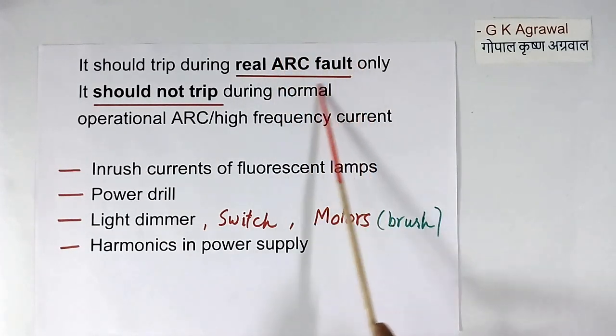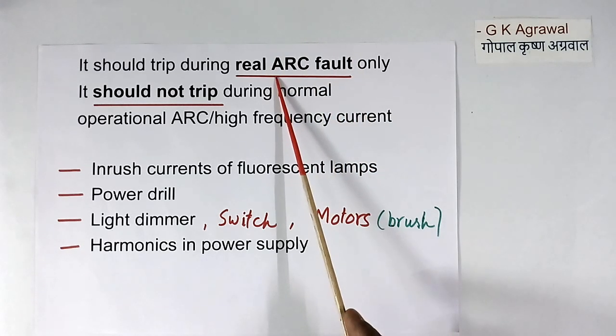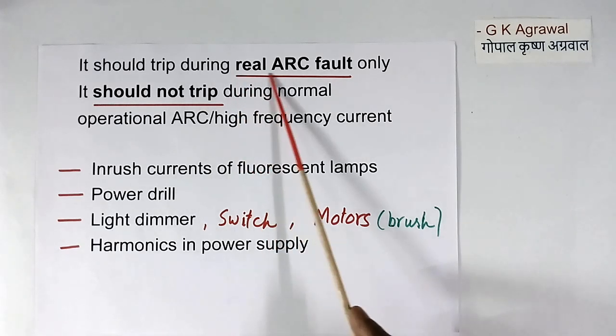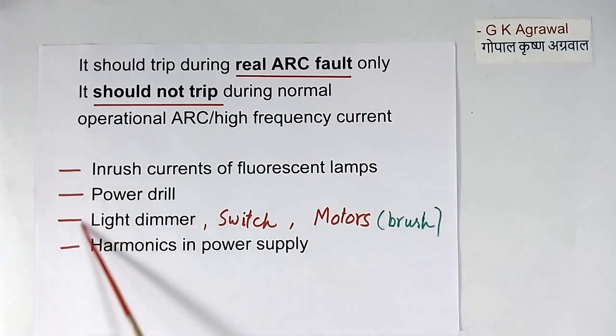Now this arc fault generates high frequency current in the wire. But high frequency current is generated from so many things, like inrush current in lamps, power drain load, light dimmer, switch, brush motors, harmonics in power supply. All these generate harmonics. All these generate high frequency current in the wire. Then controller should differentiate between them.